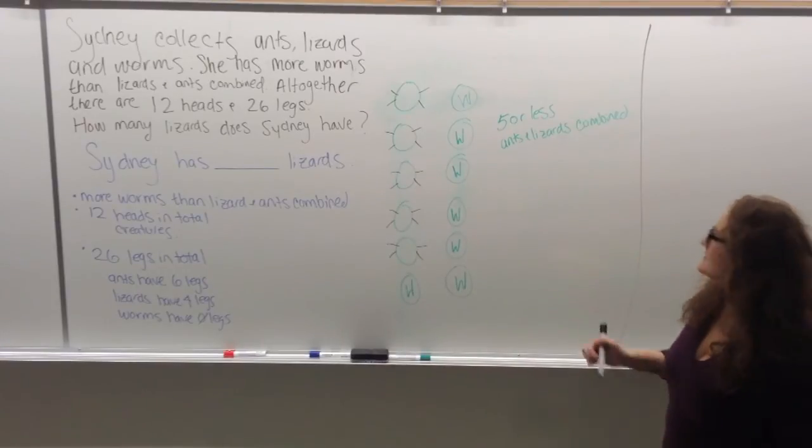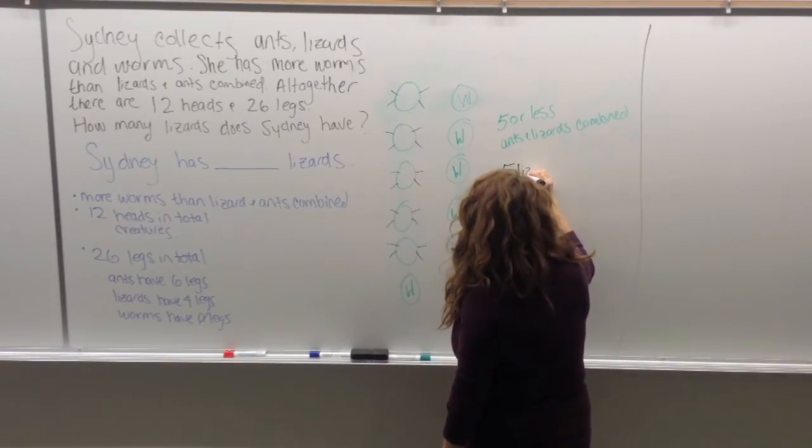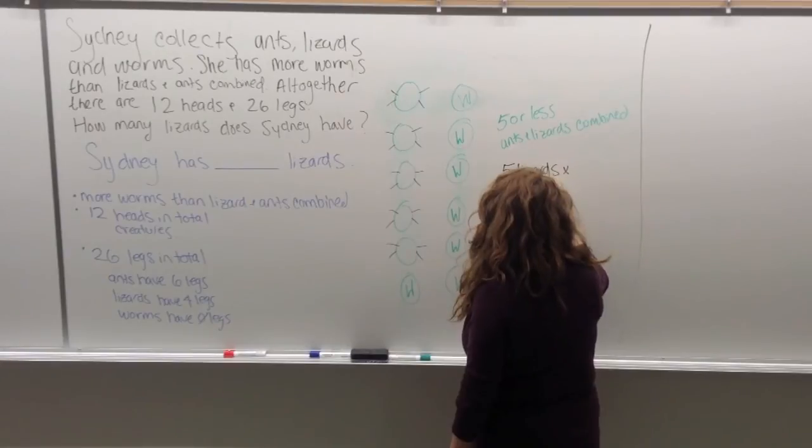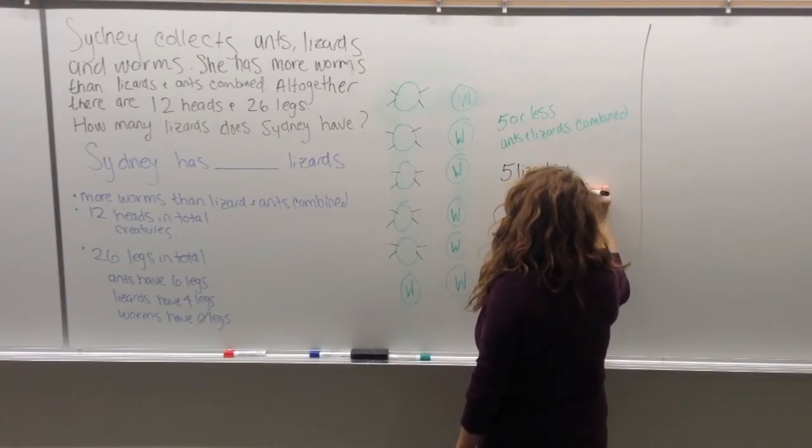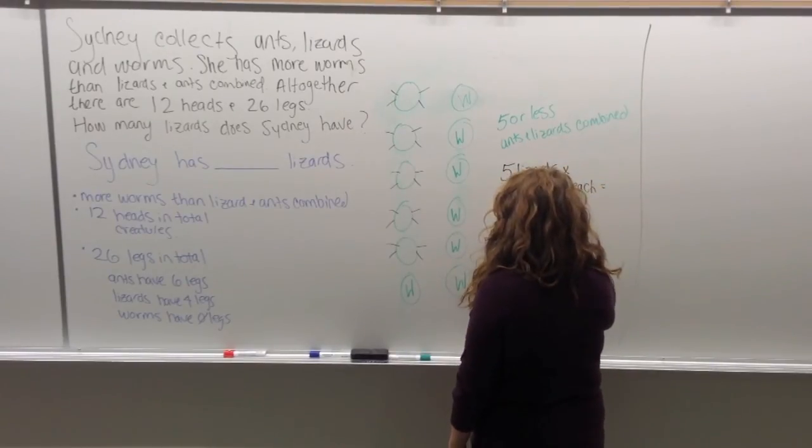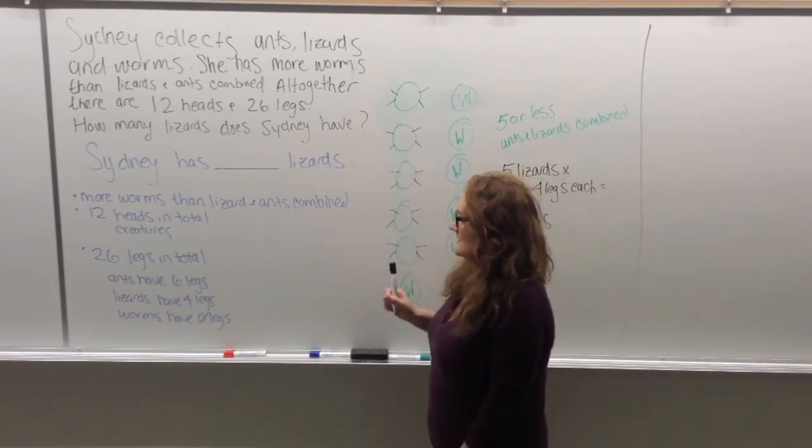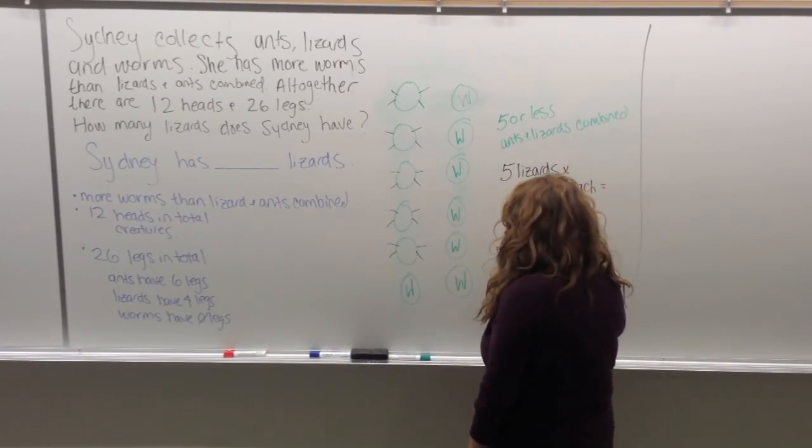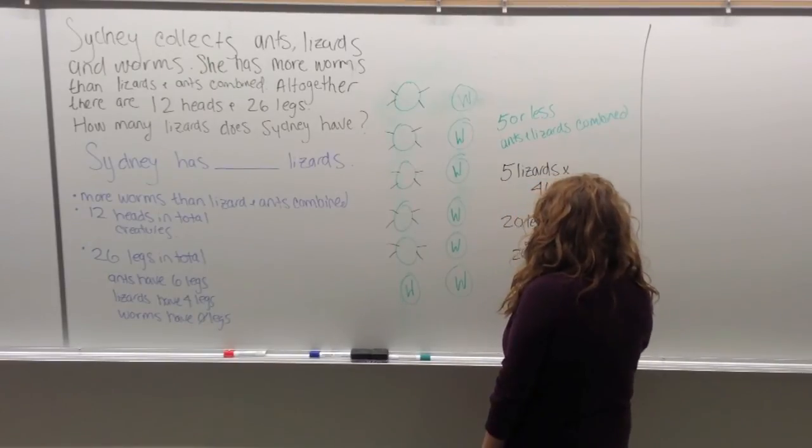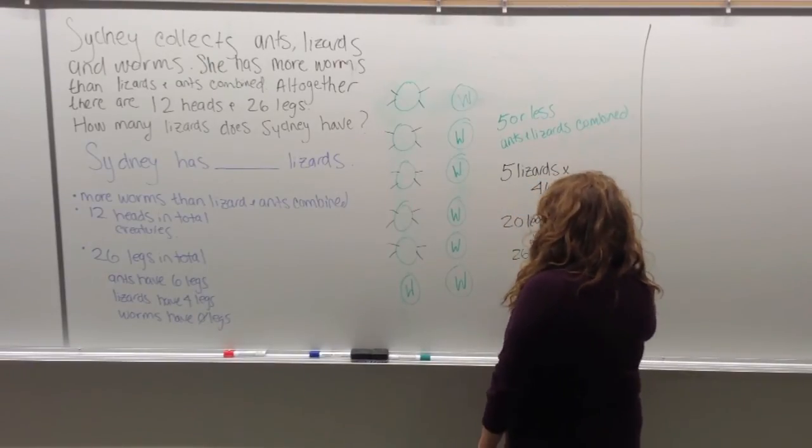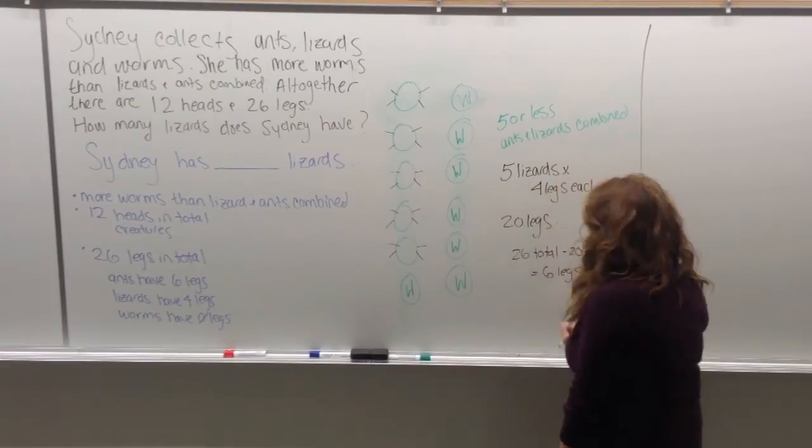So if the remaining 5 are lizards, then we have 5 lizards times 4 legs each. That gives us 20 legs. But we know we have 26 legs, so something must be wrong here. That means that we have 26 total minus the 20 legs we've already added. That means we have 6 legs left to account for.